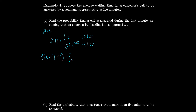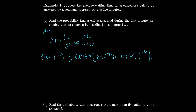That's the integral from 0 to 1 of 0.2·e^(−t/5) dt, which equals 0.2 times (minus 5) times e^(−t/5) evaluated from 0 to 1, giving us 1 minus e^(−1/5), which is approximately 0.1813.